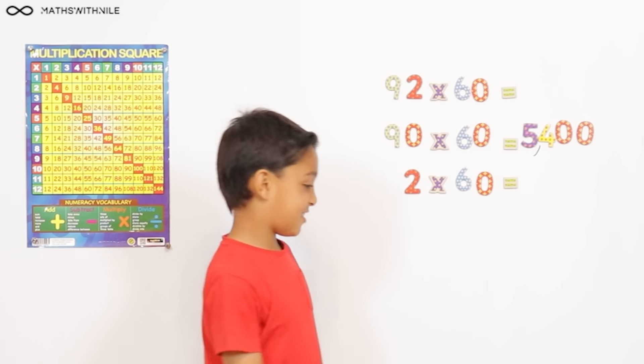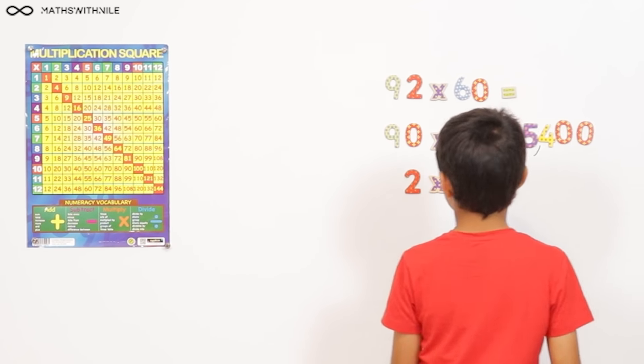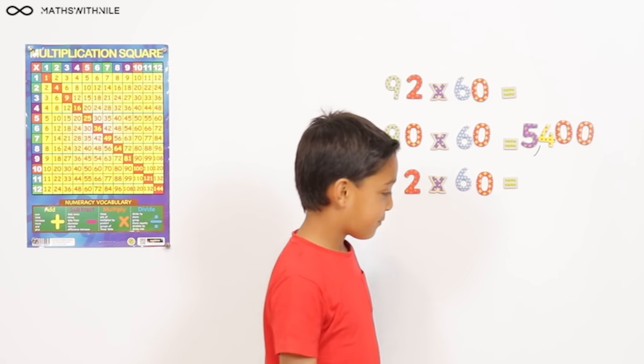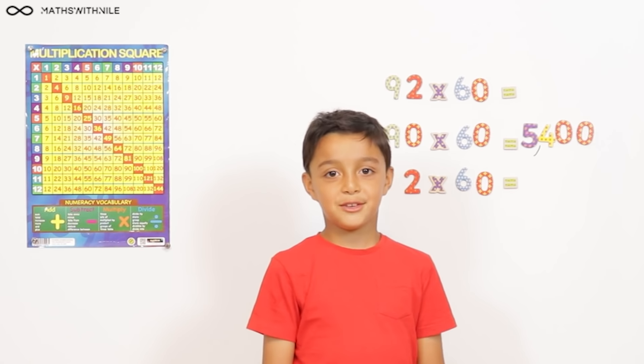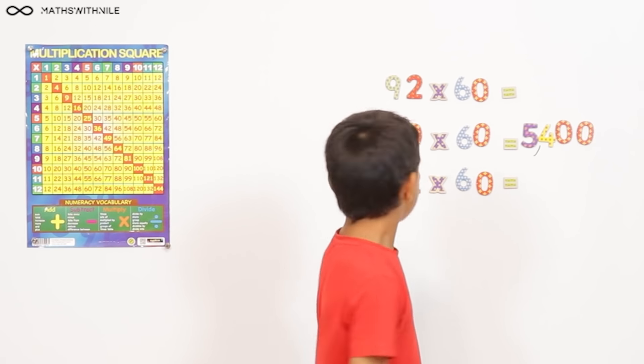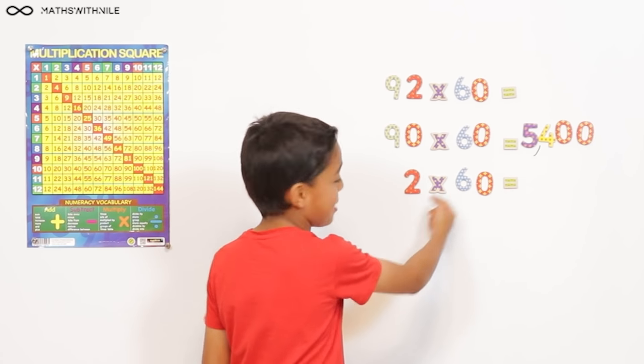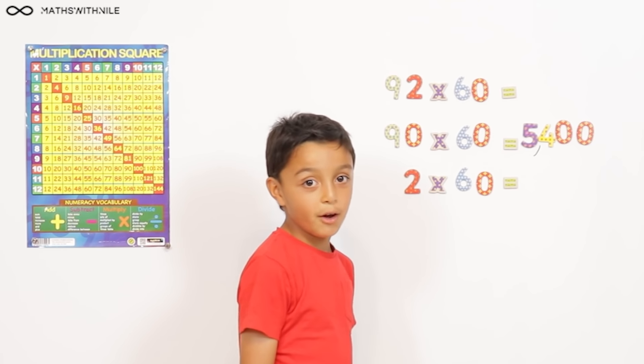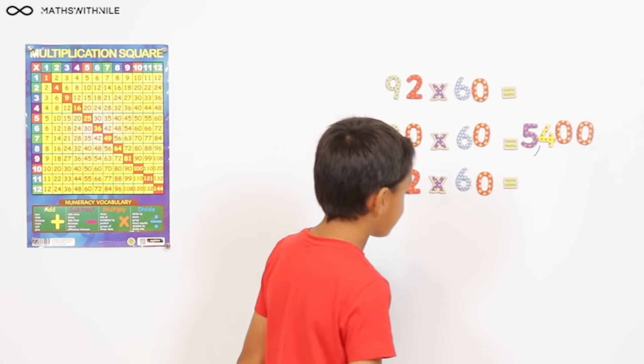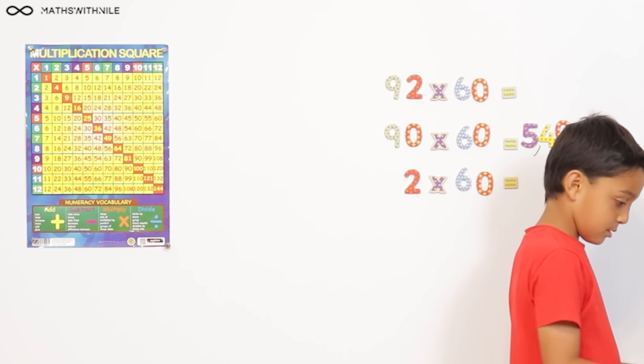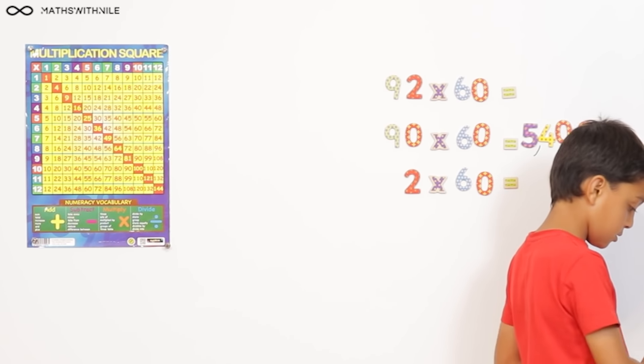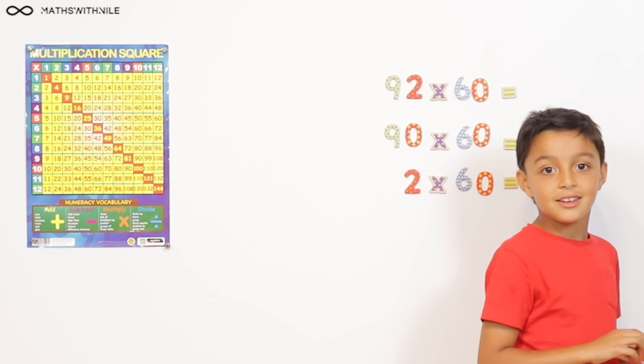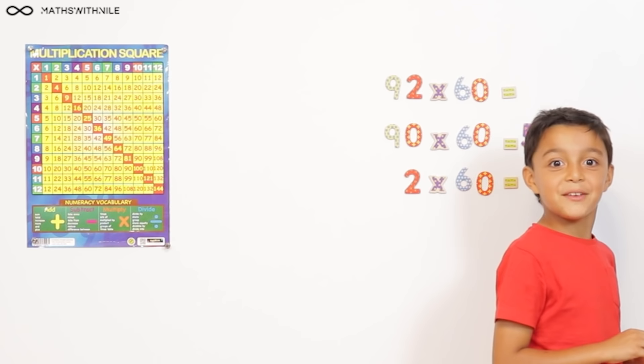2 times 60. So, 2 times 60. 120. Okay. Did you use the method, or did you just know the answer to that? I just knew the answer. Can you explain using the method? 2 times 6 equals 12, and then add a zero, so 120. Very good. Maybe when you're putting the 120, line it up with the 5,400, so that it values, and then you can do what? Column method. Yes, of course. What do you think?